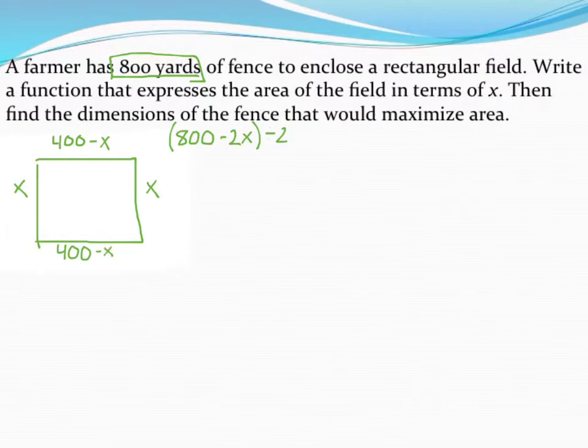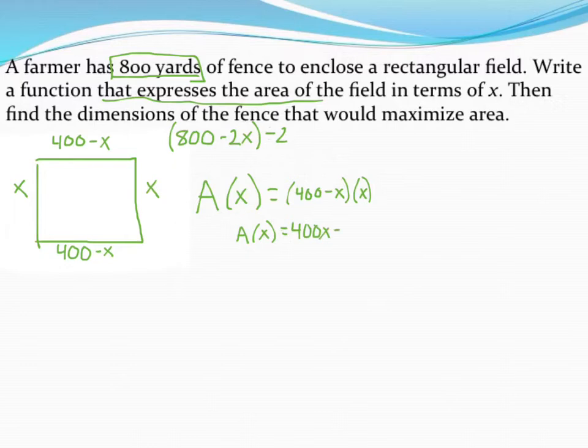To then express my area as a function of x, this part of the problem, I'm just going to set up an area equation, while area of a rectangle is just base times height. So the area as a function of x would simply be 400 minus x times x. And once I go ahead and distribute, I can see that my simplified area expression, or area equation, is just 400x minus x squared.